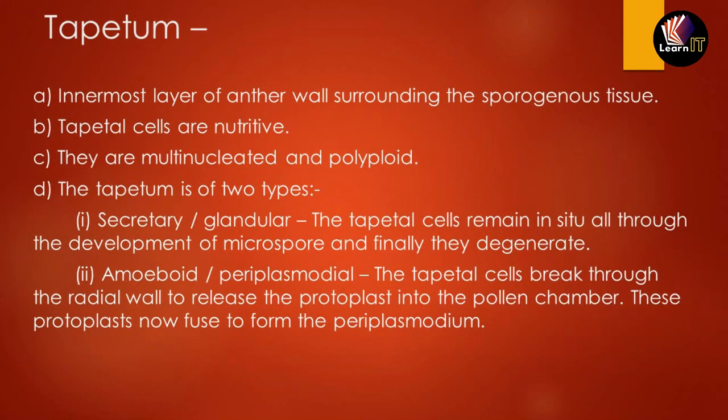In detail, the tapetum is the innermost layer of the anther wall that surrounds the sporogenous tissue. It acts as a nutritive medium for sporogenesis — the spores inside the anther.